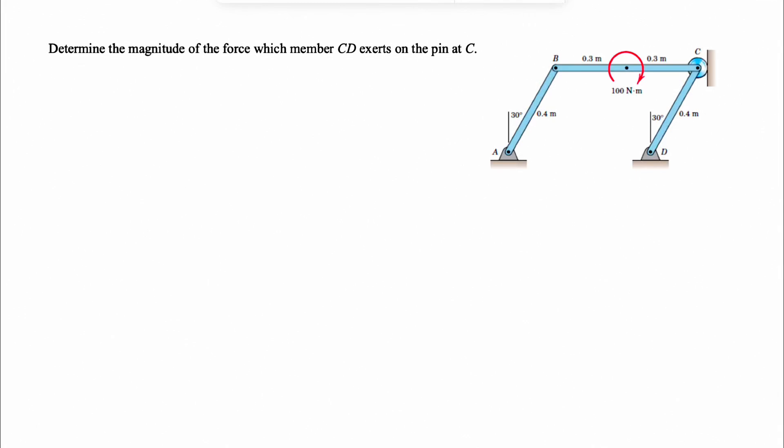All right guys, we're going to be solving two more questions from the fourth chapter of the engineering mechanics textbook. In the first one, we need to determine the magnitude of the force which member CD exerts on the pin at point C.